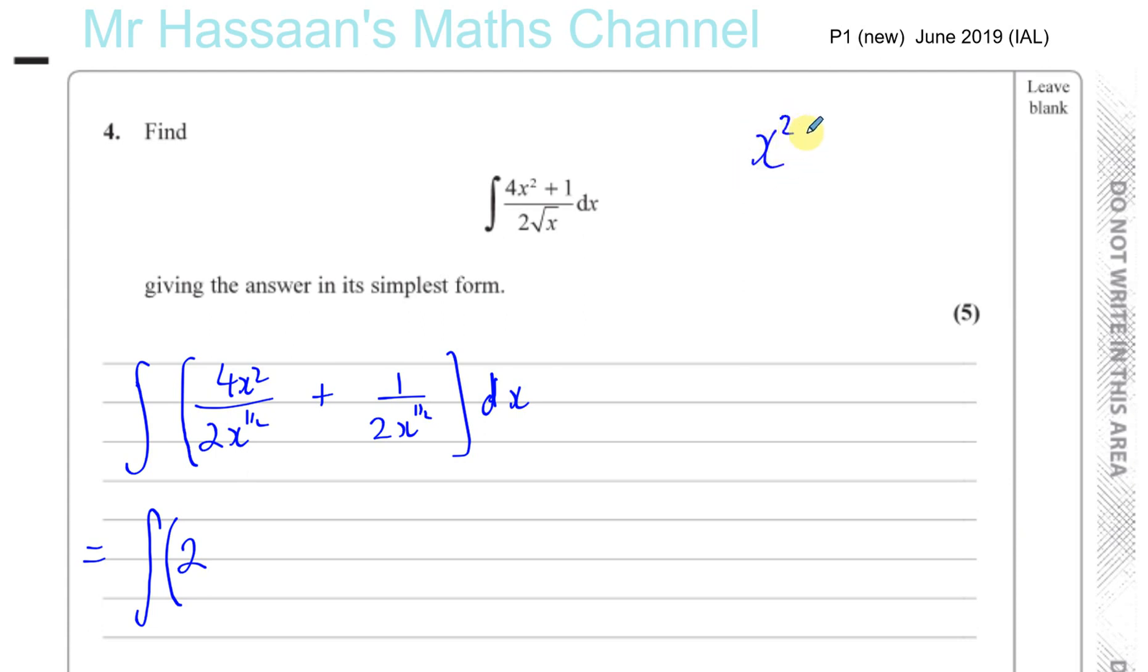x squared divided by x to the power of half, you subtract the powers. Okay, so this is like x to the power of 4 over 2 minus 1 over 2, which is x to the power of 3 over 2. So this is 2x to the power of 3 over 2. Remember, we still haven't integrated it, we're just preparing it for integration.